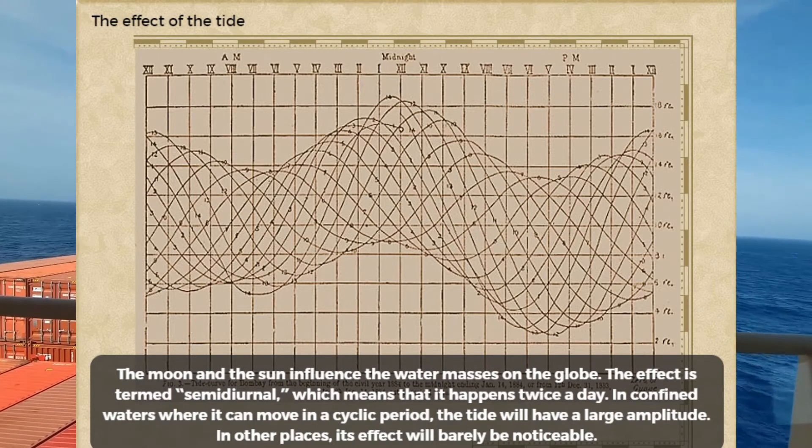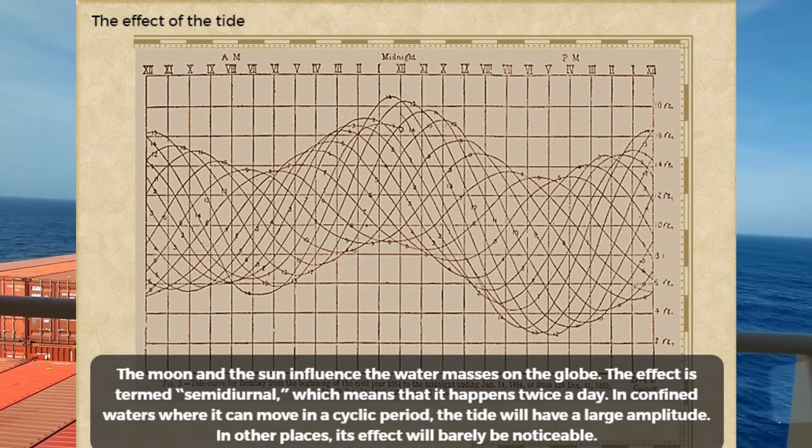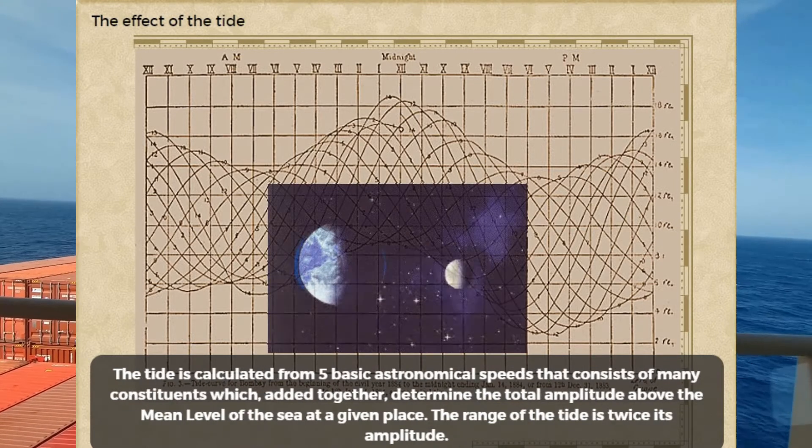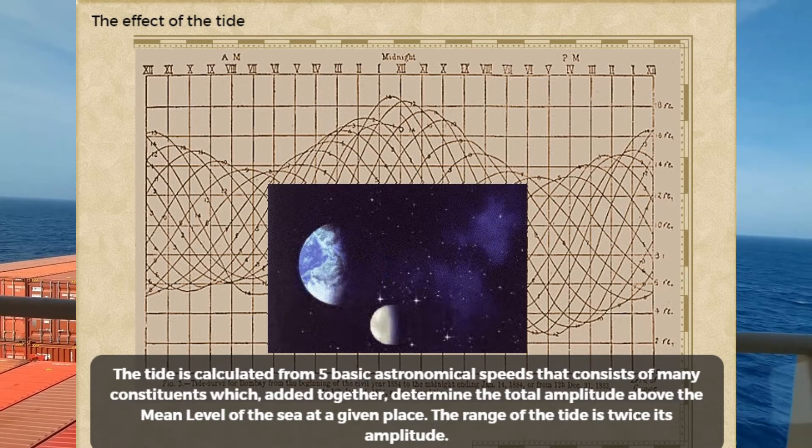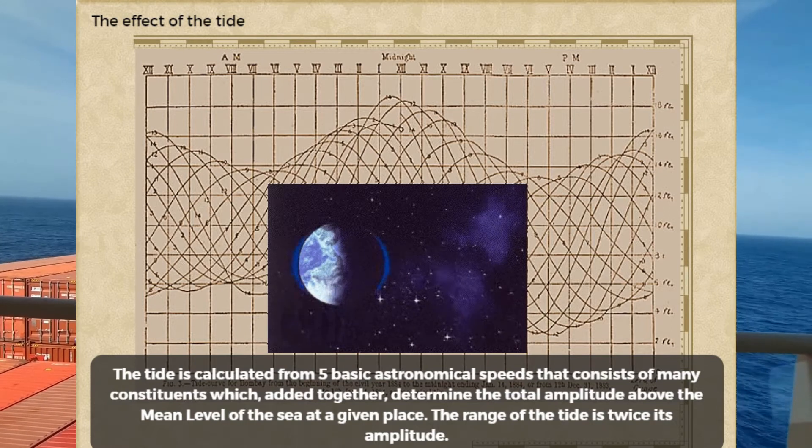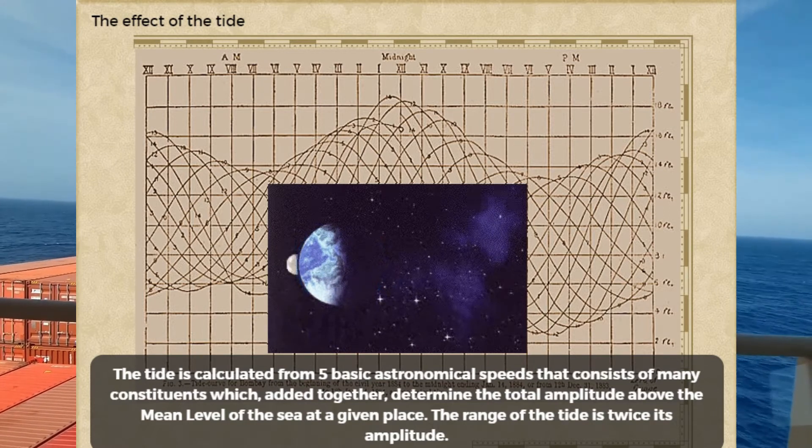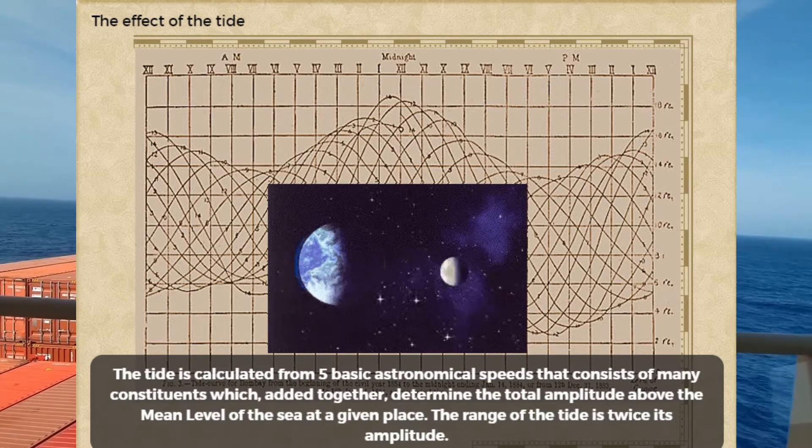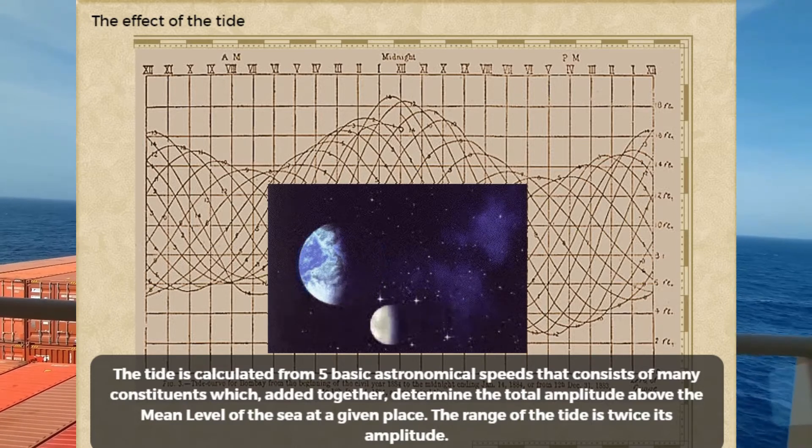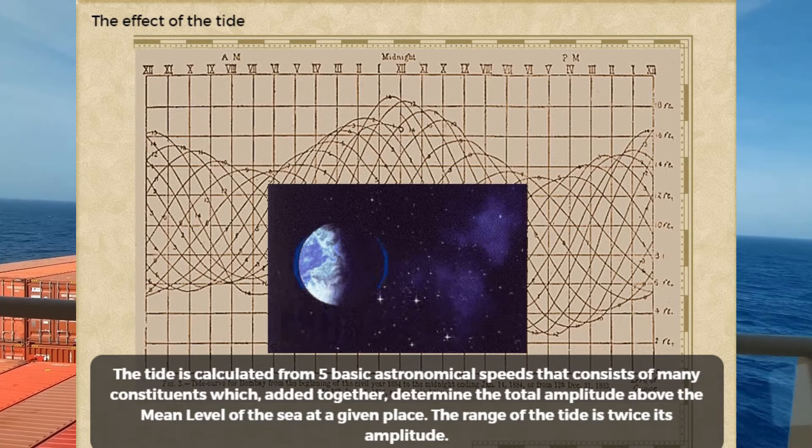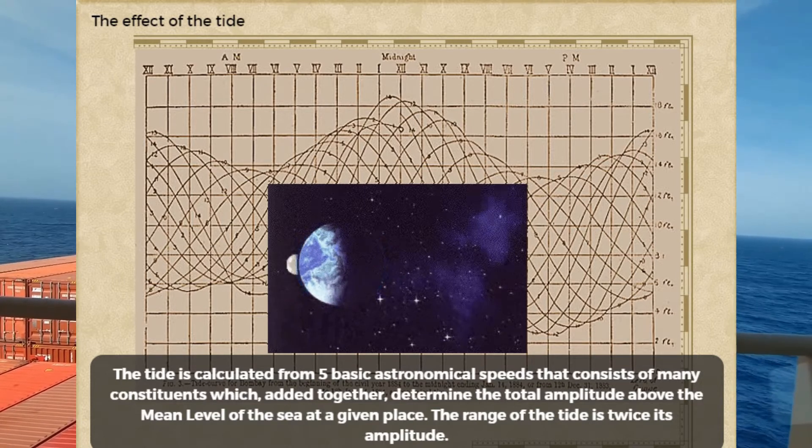In other places, its effect will barely be noticeable. The tide is calculated from five basic astronomical speeds but consists of many constituents which, added together, determine the total amplitude above the mean level of the sea at a given place.